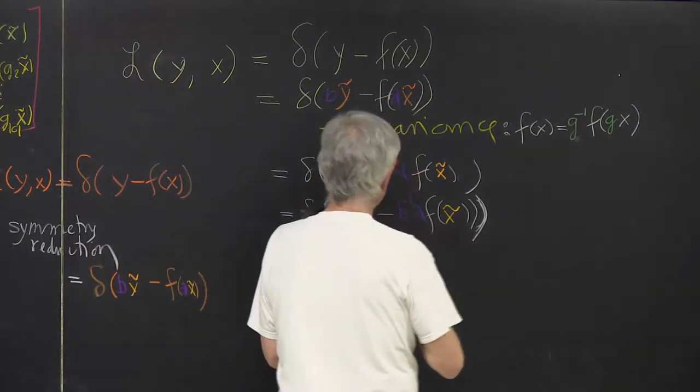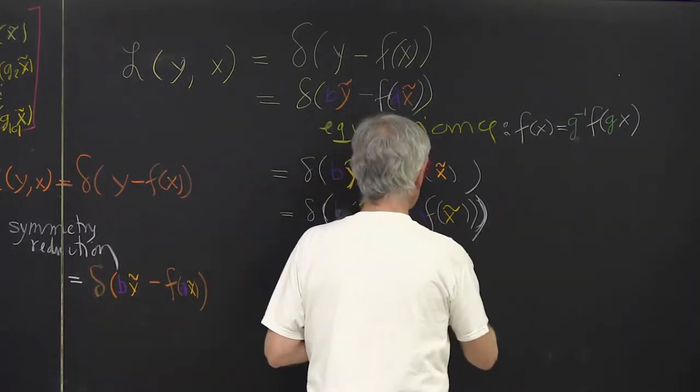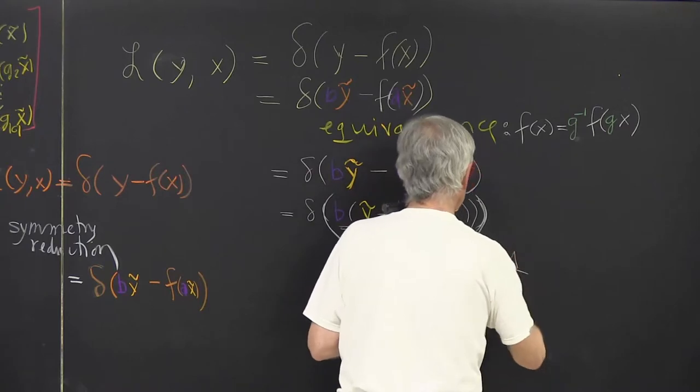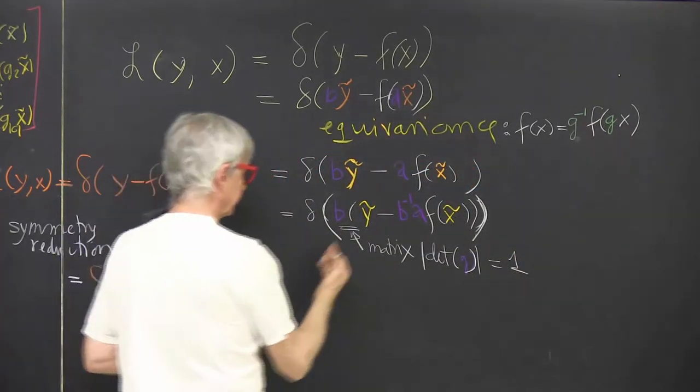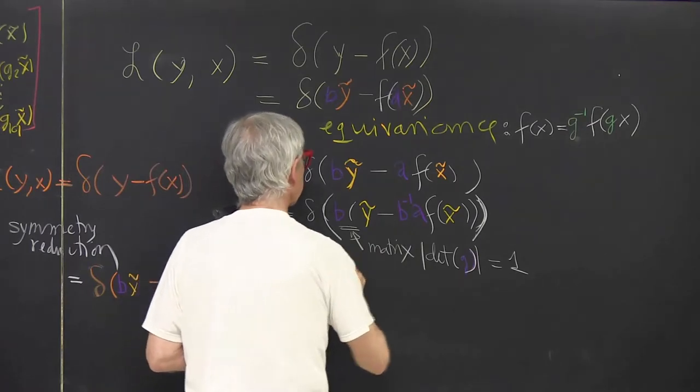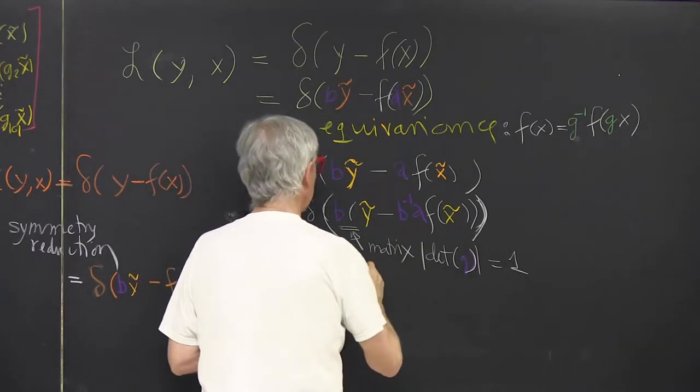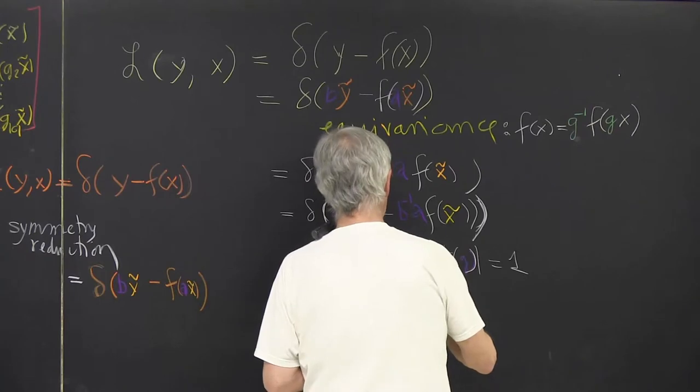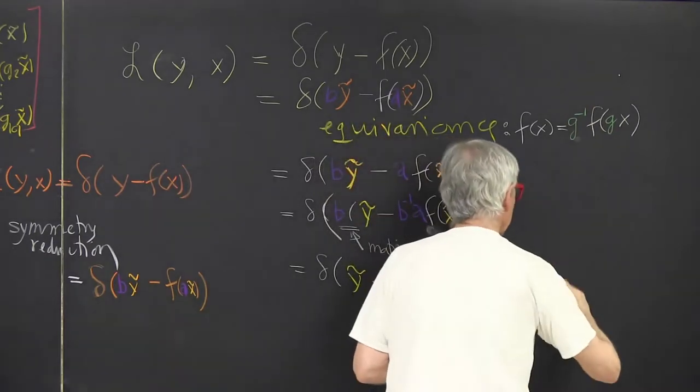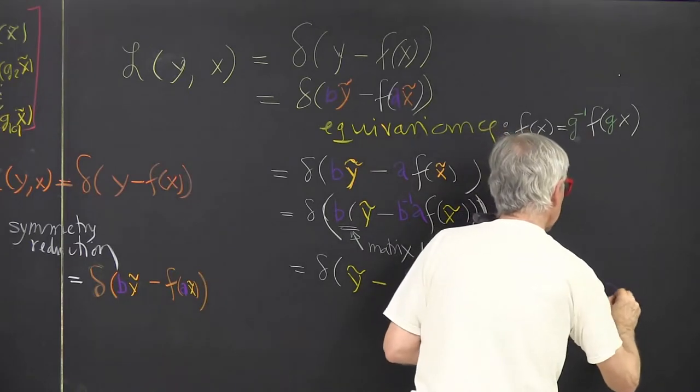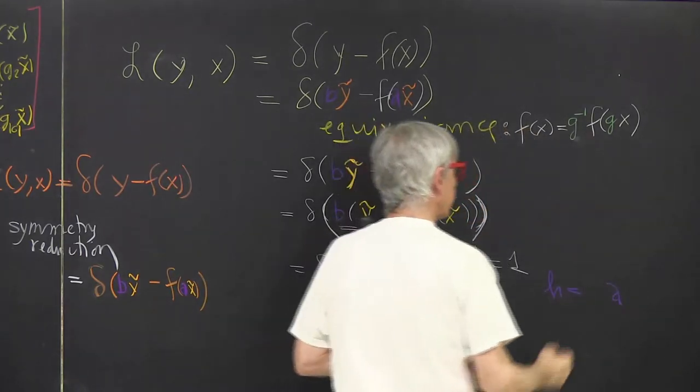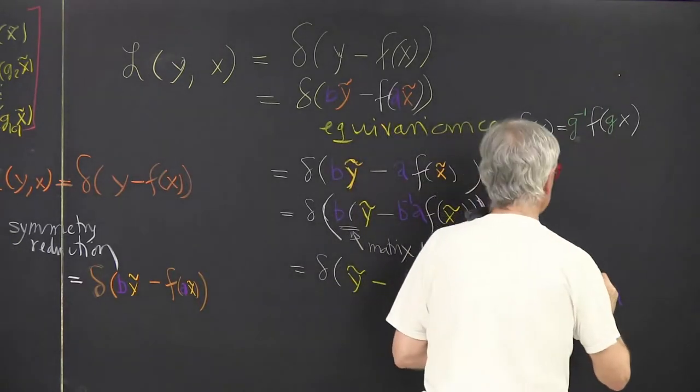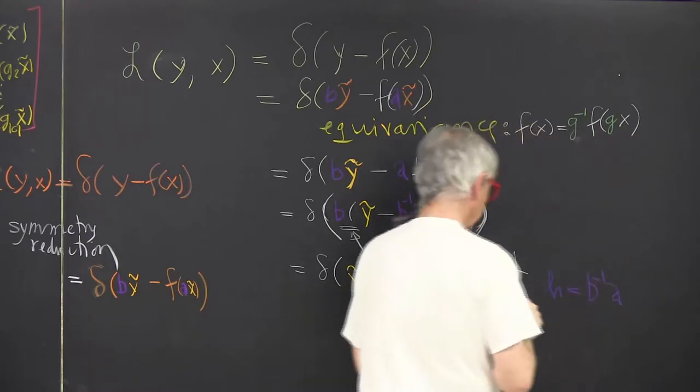So this matrix has the property that the determinant of any group element, its absolute value, is one. So we can write this as a delta function of y minus—and here I'll write h, and I'll define h to be: go from the initial point to fundamental tile, evolve using the full law of motion, and put the final point back into fundamental tile.